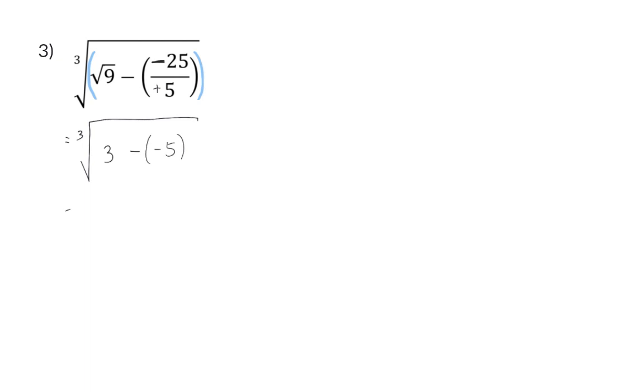In my next step, I am going to get rid of the bracket by multiplying a minus times a minus, and that is a plus 5. So now I can add up to get the cube root of 8, and the cube root of 8 is 2.